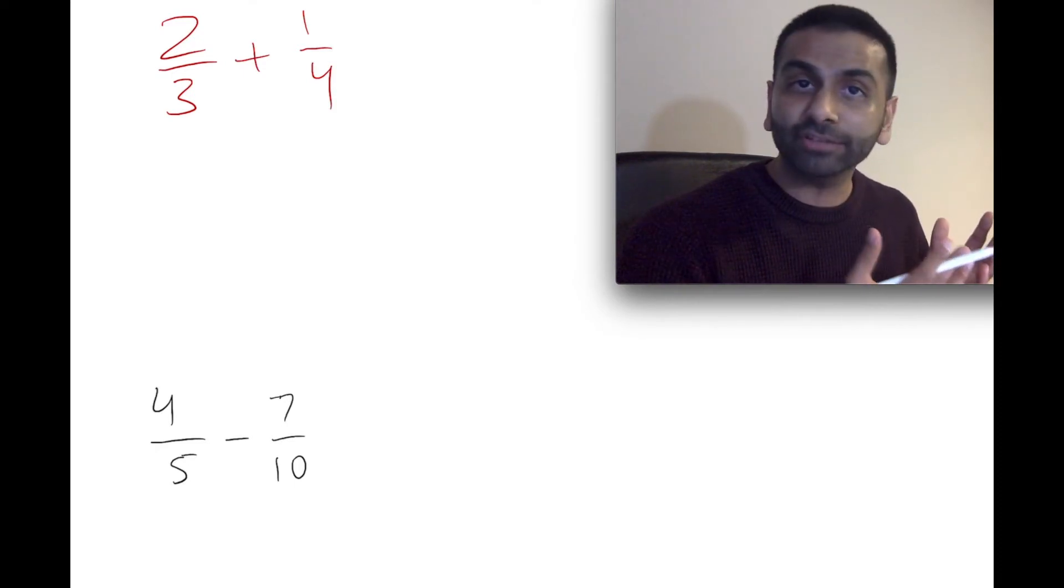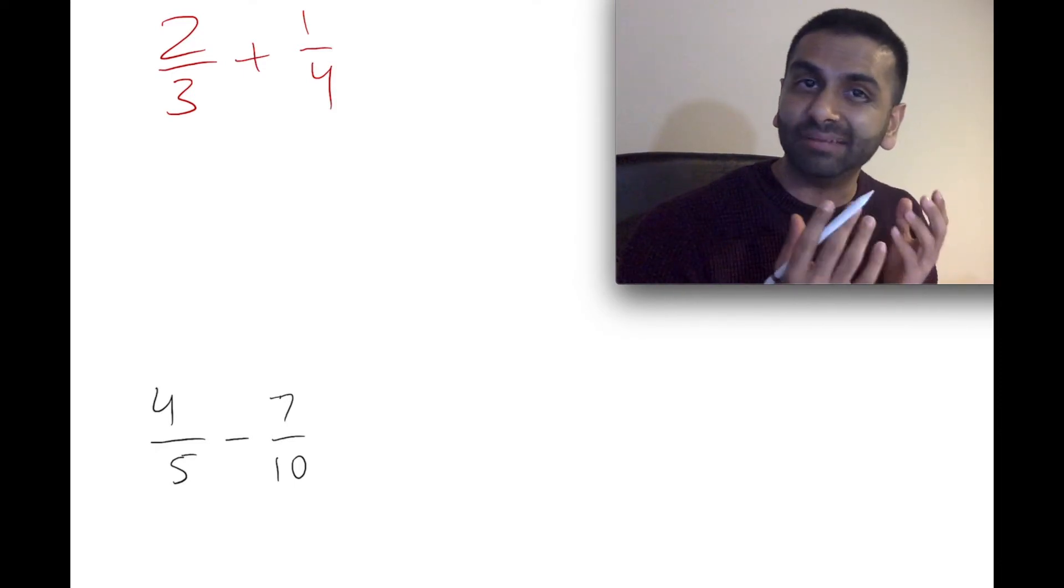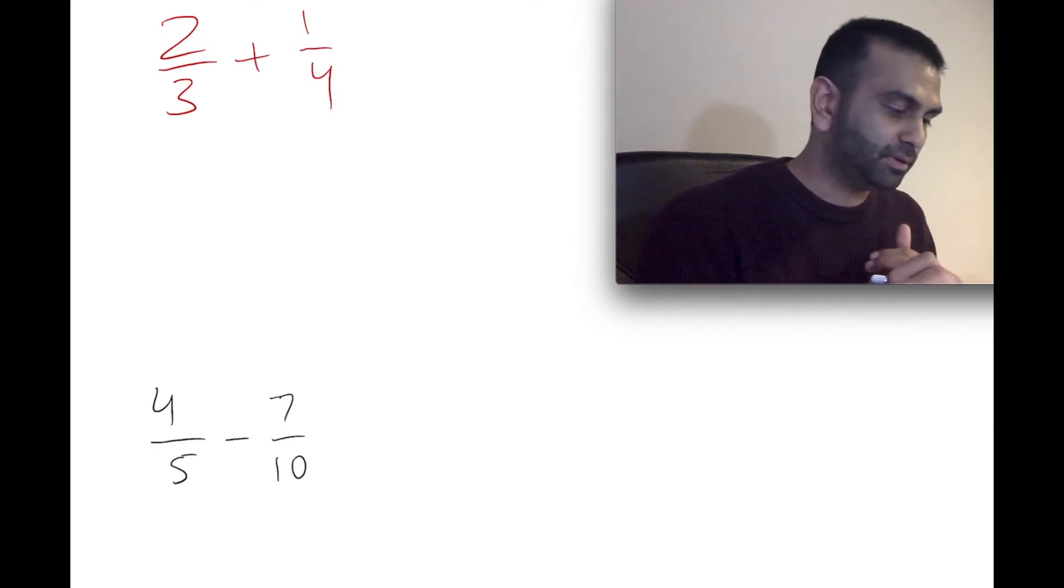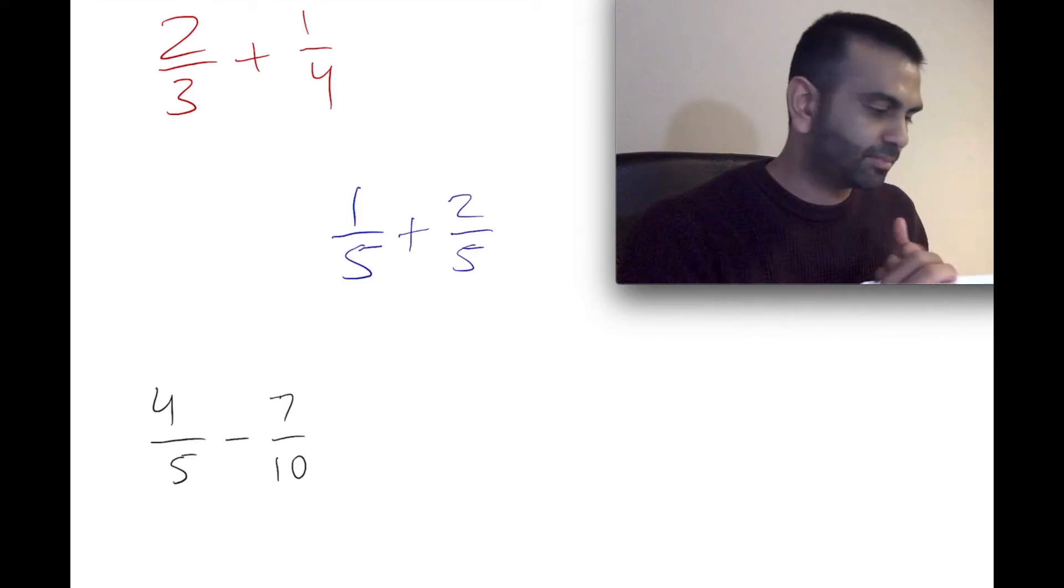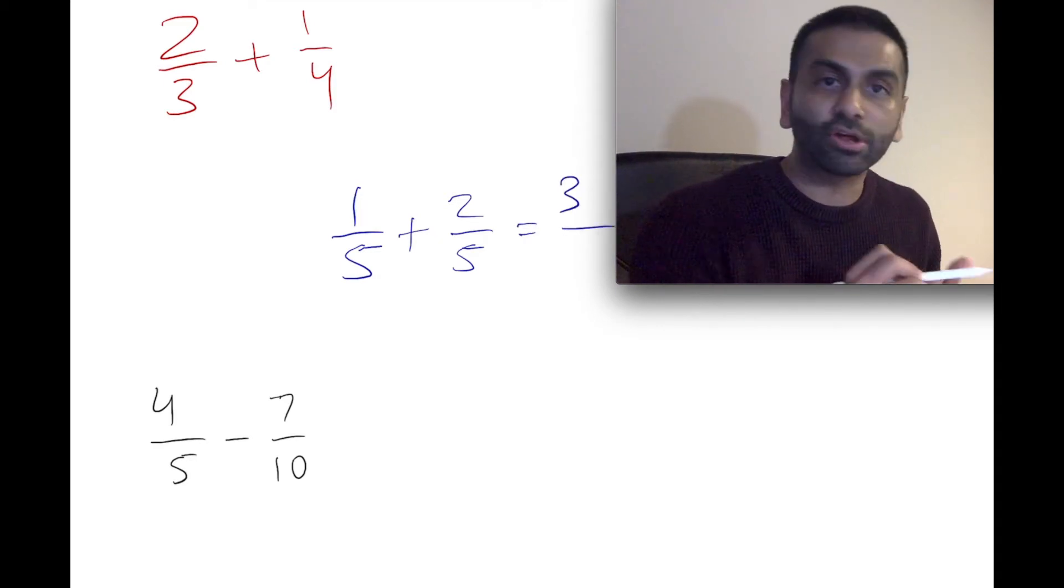For adding two fractions, if you already have the same denominator, for example, one-fifth plus two-fifths, you have the same denominator. That's the number on the bottom. Well, then all you've got to do is add the numerators, the tops. So that's going to be one plus two, which is three.